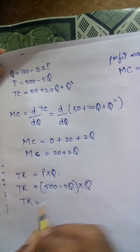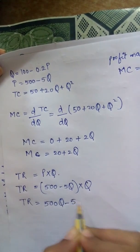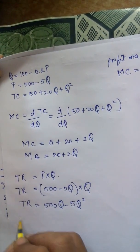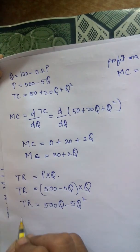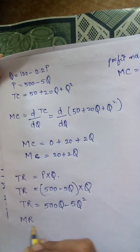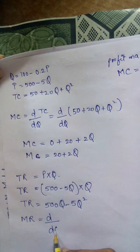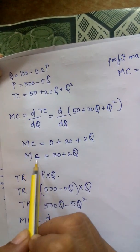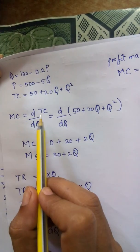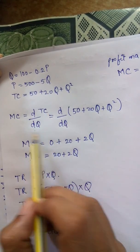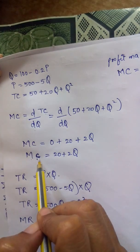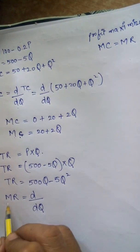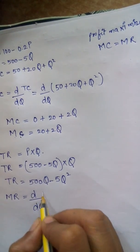This becomes 500Q minus 5Q squared. Now with the help of TR, we will get the value of MR. For MR, we will again differentiate. Just as we got MC by differentiating the total cost function TC, after differentiating TR we will get MR.